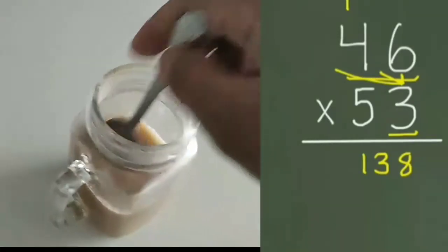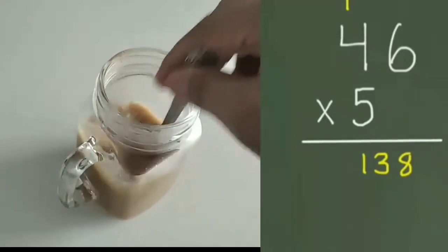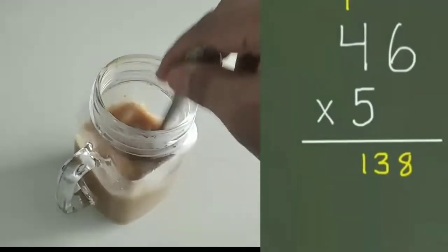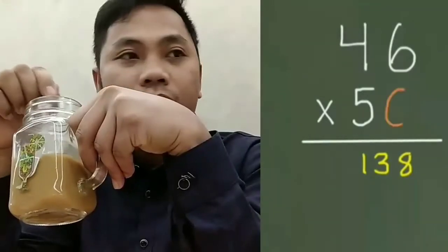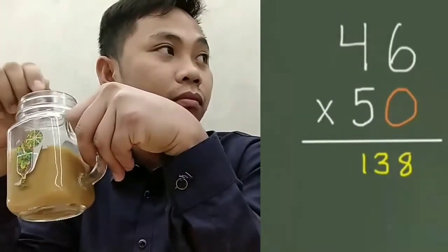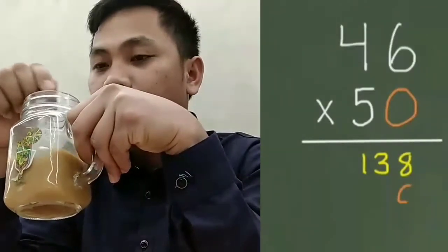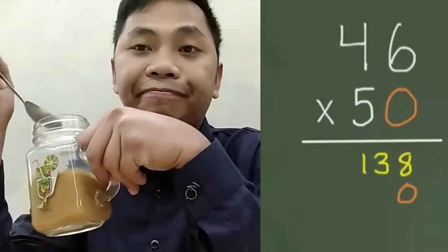And since I'm done with my 3, if I wanted to, I could make it disappear for a second also. So this 5 in our bottom factor is really a 50. So we need to remember to put a 0 down here.